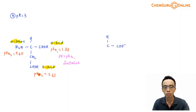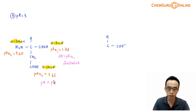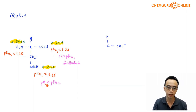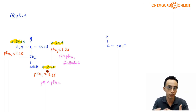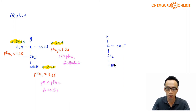Next, let us consider the R group acid. Its pKa2 is 3.65. At pH 3, the pH is smaller than pKa2, so the solution is acidic with respect to the R group acid. Since this is an acid functional group and the solution is acidic with respect to it, it would not respond. The R group acid will just remain as a COOH group.